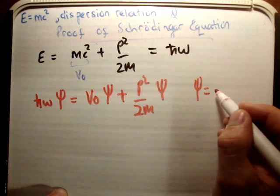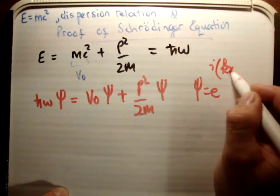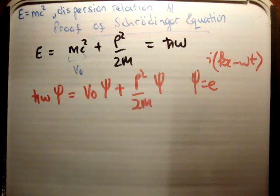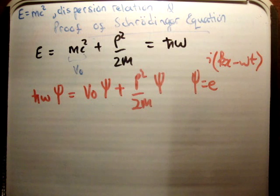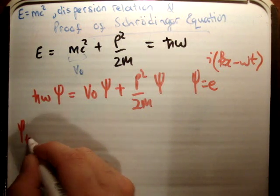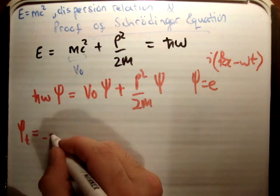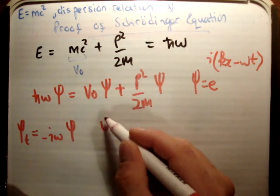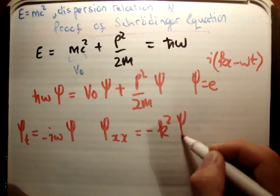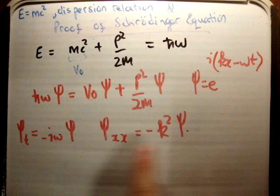The next thing we're going to do is get derivatives of the wave. We want to replace the energy and momentum terms with derivatives of the wave, because differential equations are very useful. The first derivative with respect to time gives i·ω·ψ, and the second derivative with respect to x gives −k²·ψ. So each derivative returns the original wave multiplied by a pre-factor.